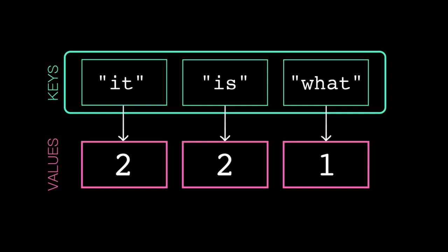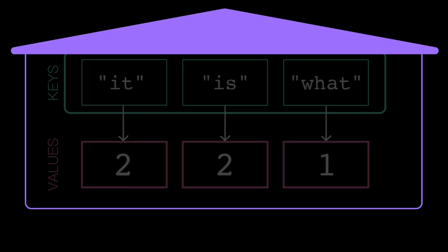So, how do these methods actually work? The keys, values, and items methods all return a special dictionary view type. This is an iterable type, meaning we can iterate over it. But it's not quite a list.